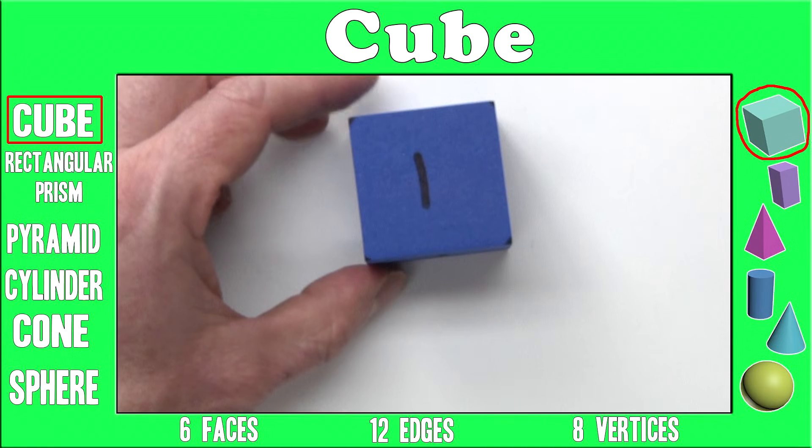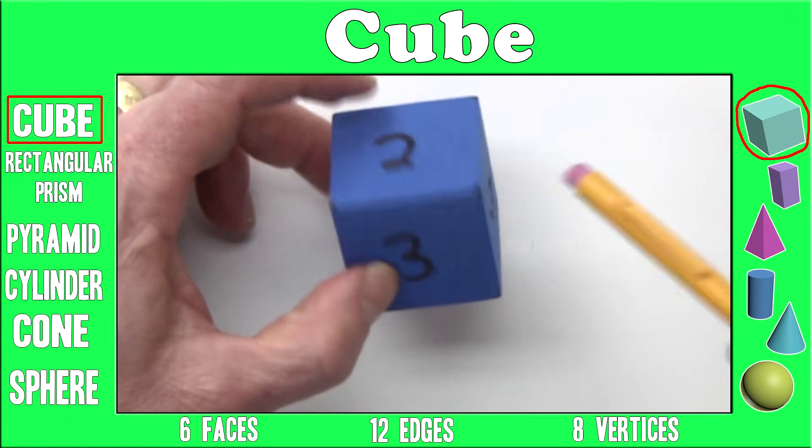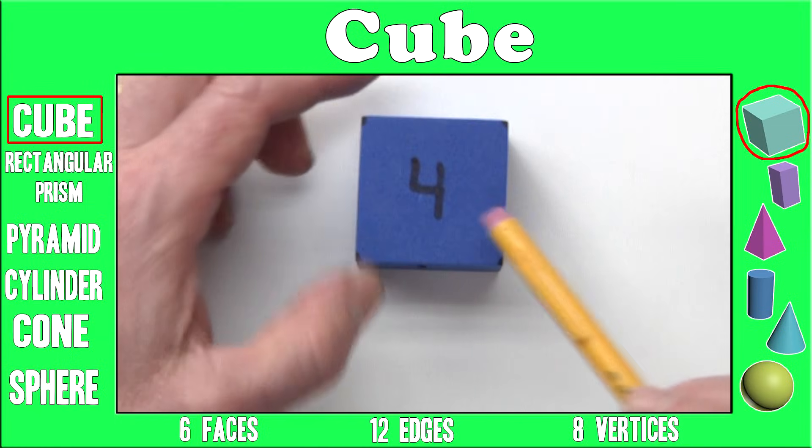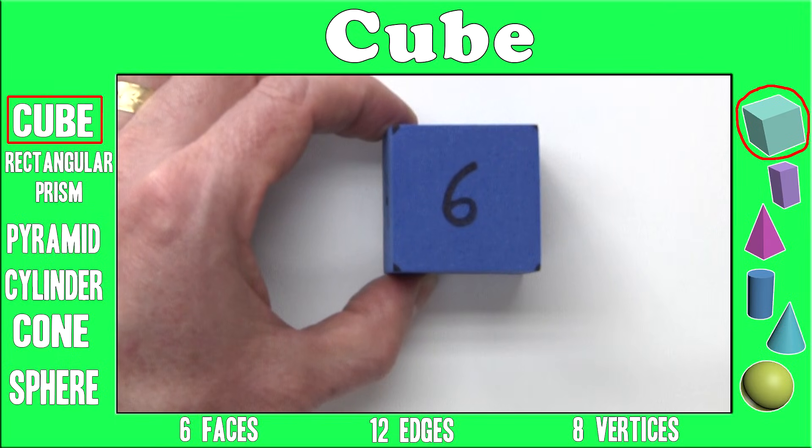A cube has six faces. One, two, three, four, five, and six.